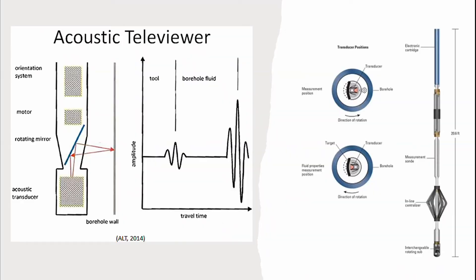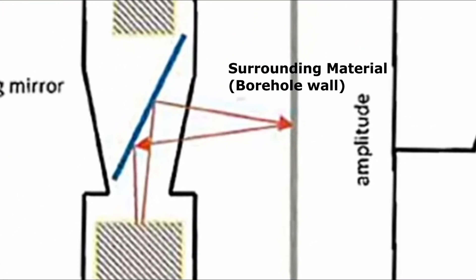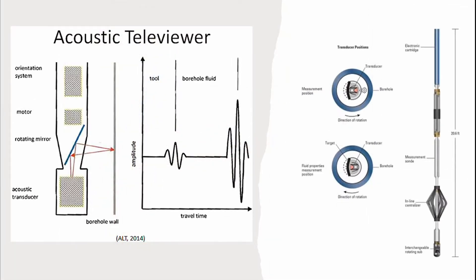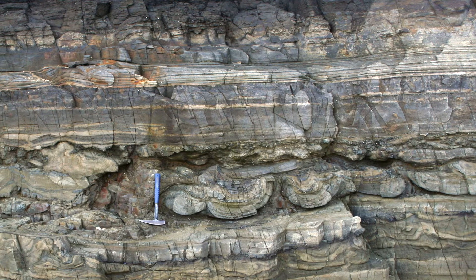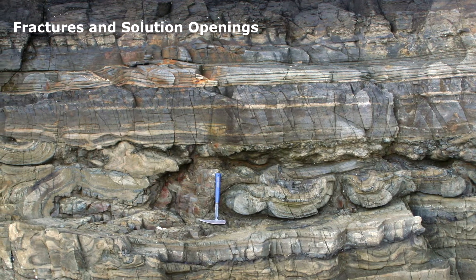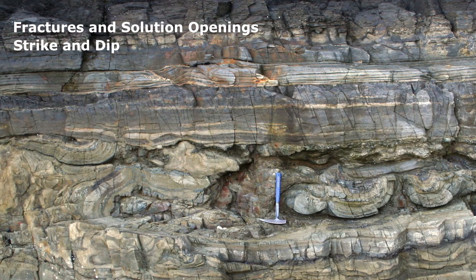Borehole image logs can be broken down into two main types of instruments that have essentially replaced dipmeters. The first is acoustic scanners, or borehole televiewers. For accurate measurements, a fluid-filled borehole is required. Acoustic scanners transmit acoustic energy from a rotating transducer, and that energy is reflected back by the surrounding material and detected by the transducer. These instruments are often used alongside electrical resistivity instruments for a more comprehensive image, with acoustic scanners responding to rock properties and electrical responding to fluid properties. These scanners are used to identify characteristics of both fractures and solution openings, as well as the strike and dip of geologic units. Additionally, acoustic scanners can also be used for casing inspection.